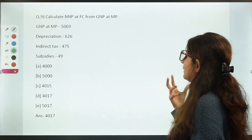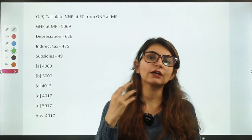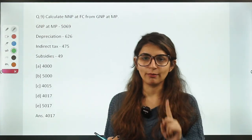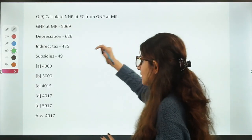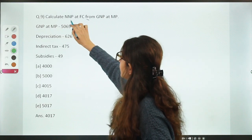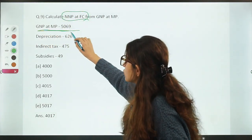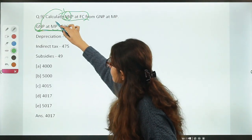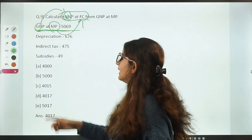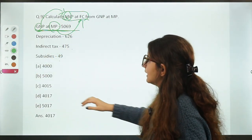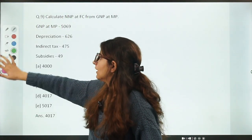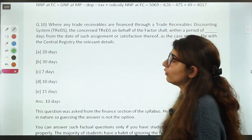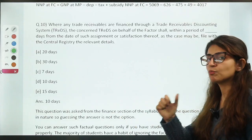Calculate NNP at FC from GNP at MP — a numerical question from the economics section. Generally we expect theoretical or conceptual questions from economics, but a numerical was asked this time. It is also taught in Class 12. G is gross and N is net, so we go from gross to net by deducting depreciation. MP is given and we need factor cost, so we exclude indirect tax and include subsidies respectively. A very easy question, also solved in our course. Numerical questions have appeared very frequently — you must practice them thoroughly.